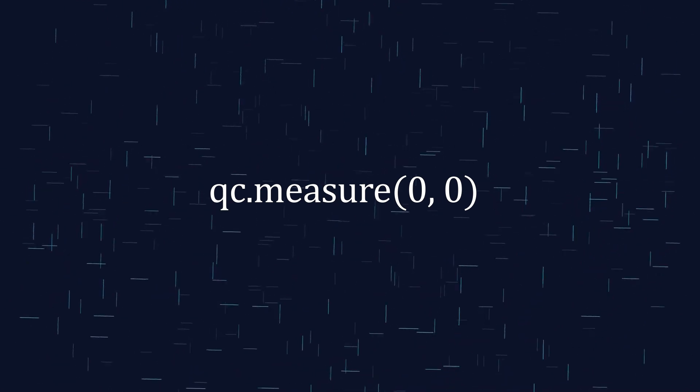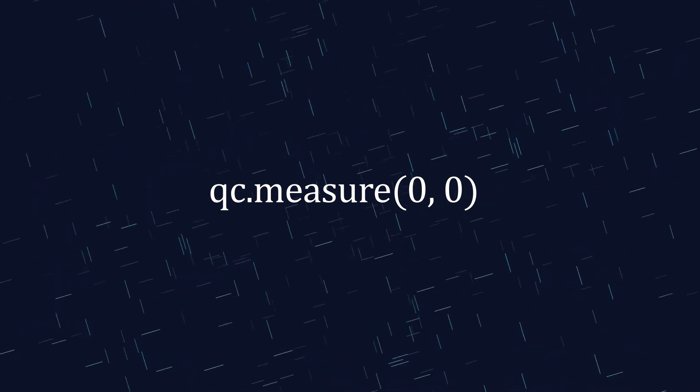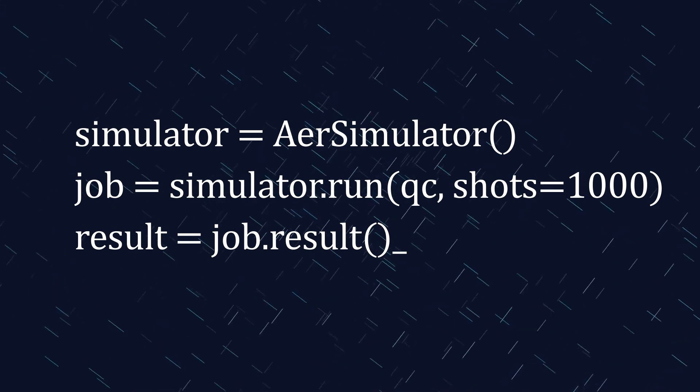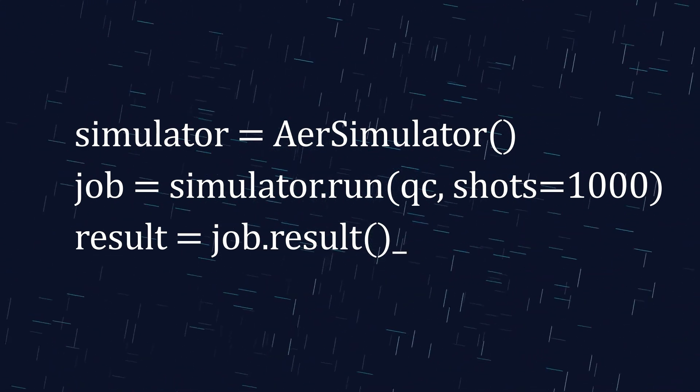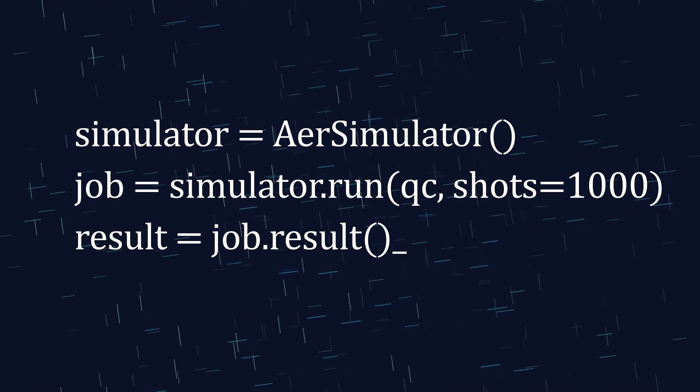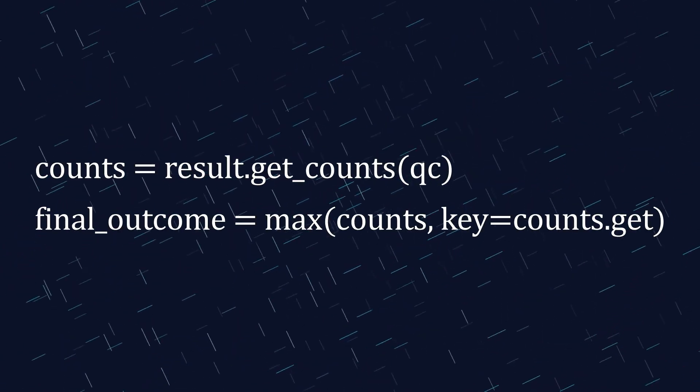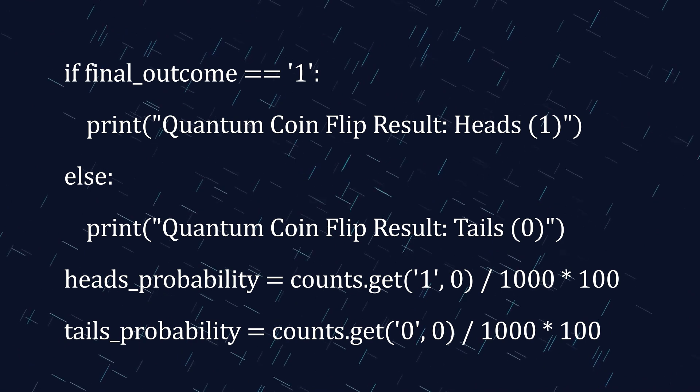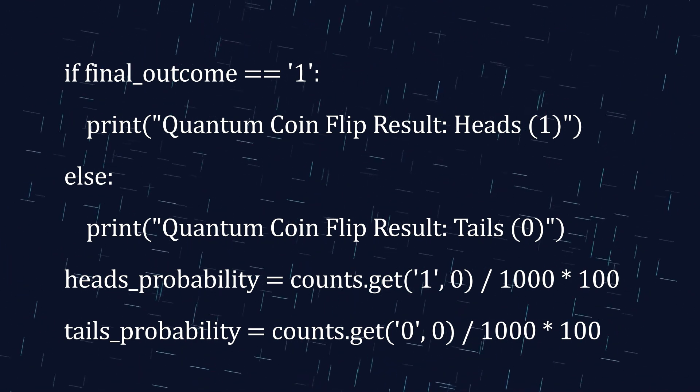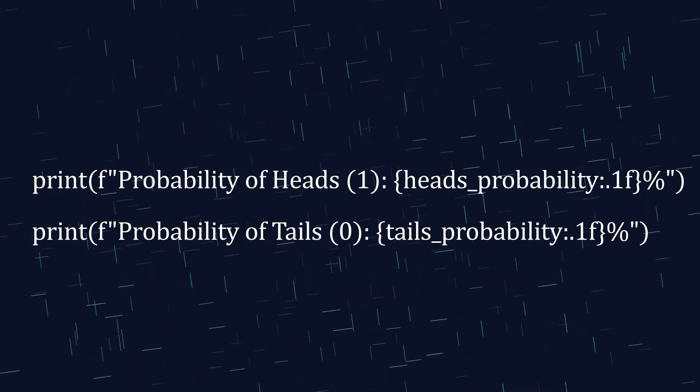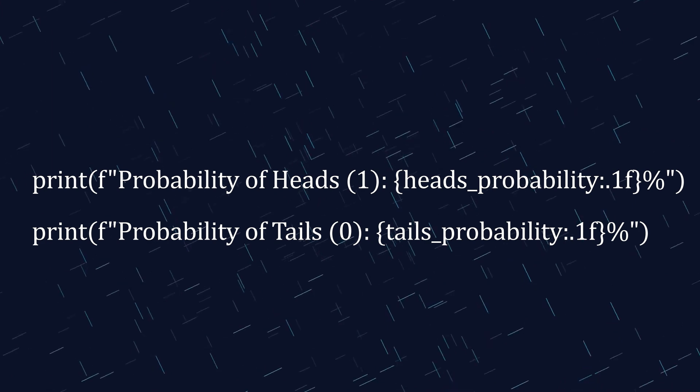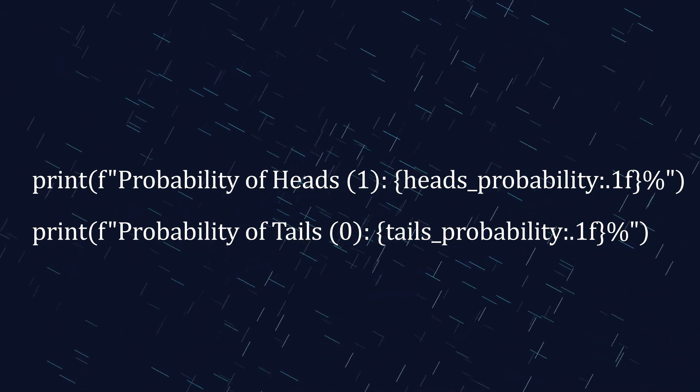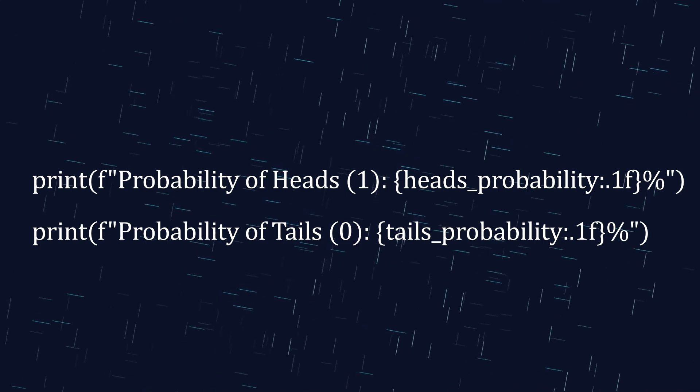We then run this circuit 1,000 times (or shots) using the Aer simulator. The simulator tells us how many times we got heads versus tails. From those counts, we find which outcome occurred most frequently and we calculate the probability of heads and tails. Finally we print out two key pieces of information: which result was most frequent (heads or tails), and the probability of each outcome expressed as a percentage.